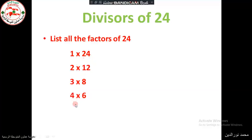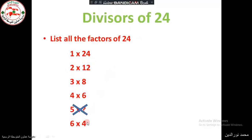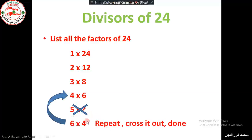5 times — no, there is no number multiplied by 5 that gives 24, so we cancel it. Then after 5 we try 6: 6 times 4. But 6 times 4 is the same as 4 times 6, so we have a repetition. We cross it out and we are done.